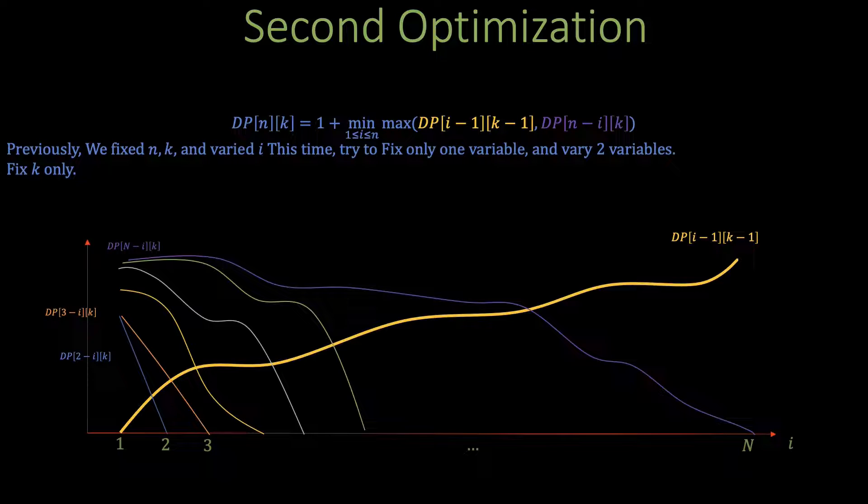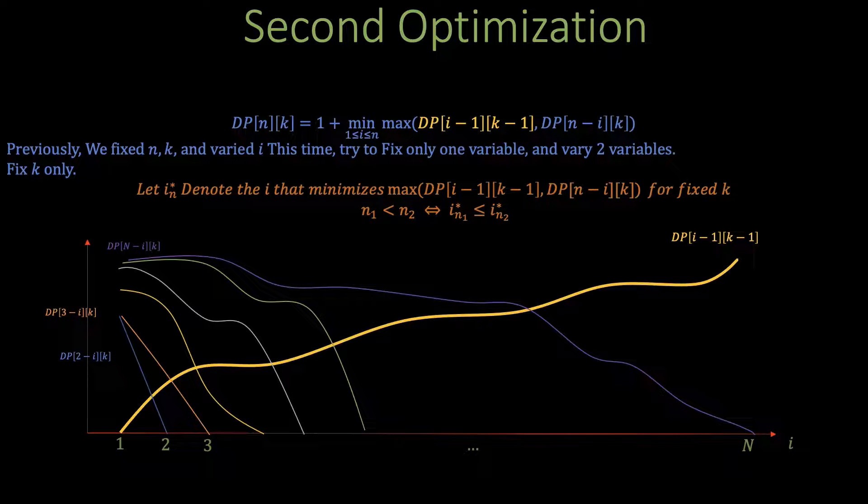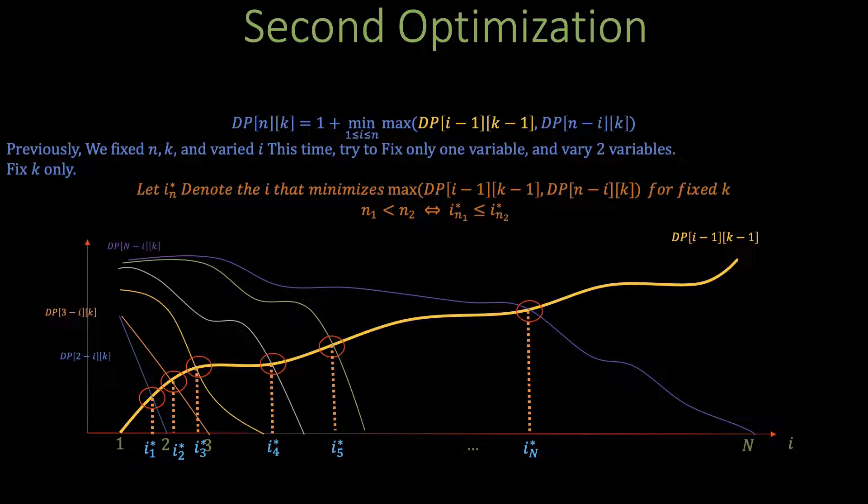Now remember that in the last video we said that the index i that minimizes the recurrence is actually the intersection of both dp[i-1][k-1] the yellow curve and dp[n-i][k]. So let us zoom in on the intersection of all of these curves with dp[i-1][k-1] or the yellow curve. You'll notice something very interesting namely that the indices are monotonically increasing. This is primarily because of the monotonicity of the dp function with respect to n.